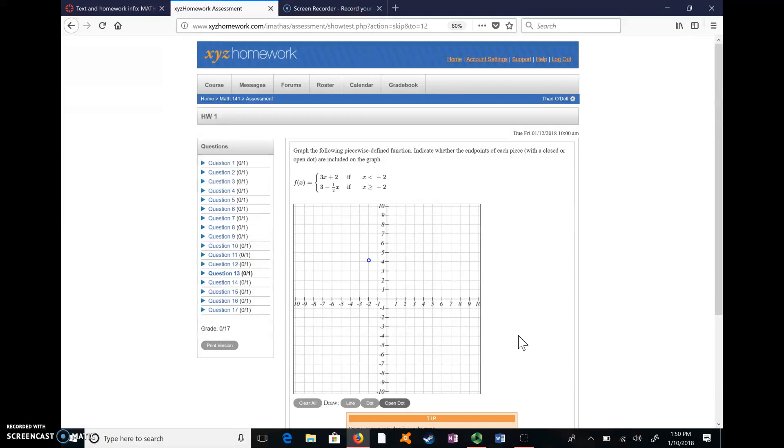Now I want to draw a line because 3X plus 2 is just a linear equation, and it has a slope of 3. I just realized that I put that dot in the wrong place. So we're going to clear all. Let's try it again. Negative 2, negative 4 is what I meant to do. So there's my open circle. It's an open circle because it says X is less than negative 2, so I'm not actually going to plug negative 2 into the first equation.